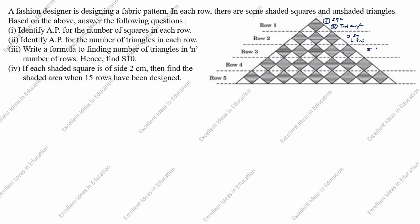In the fourth row, the shaded squares are 7 and the triangles are 14. In the fifth row, the shaded squares are 9 and the triangles are 18.